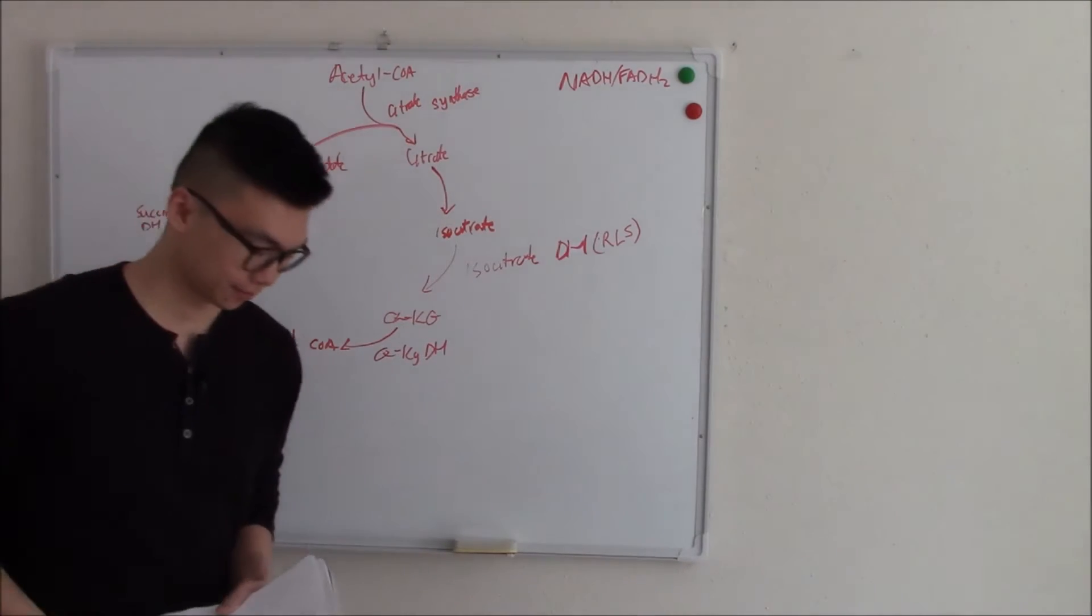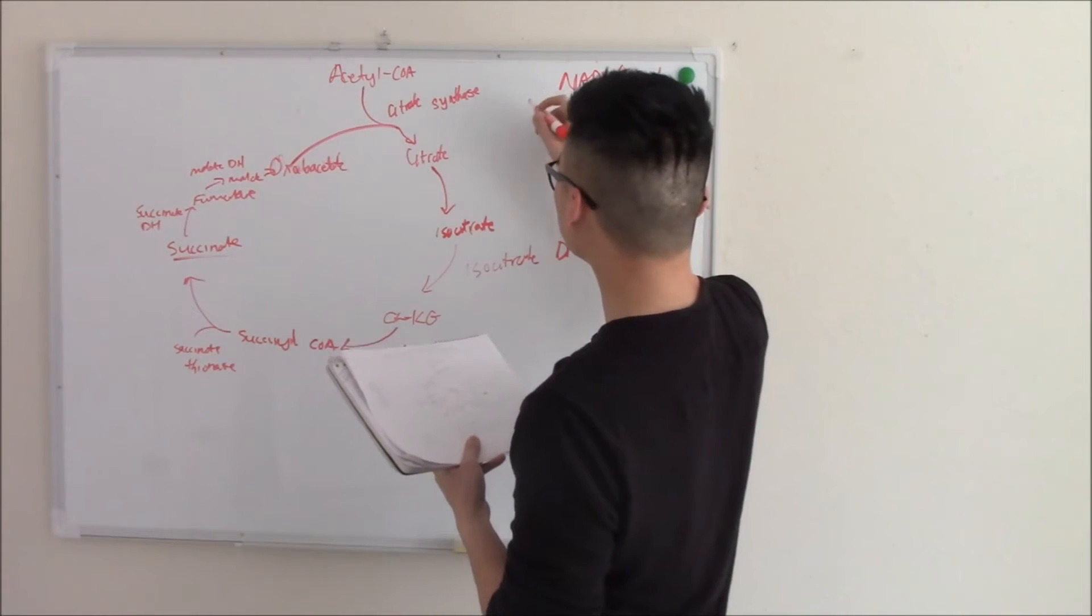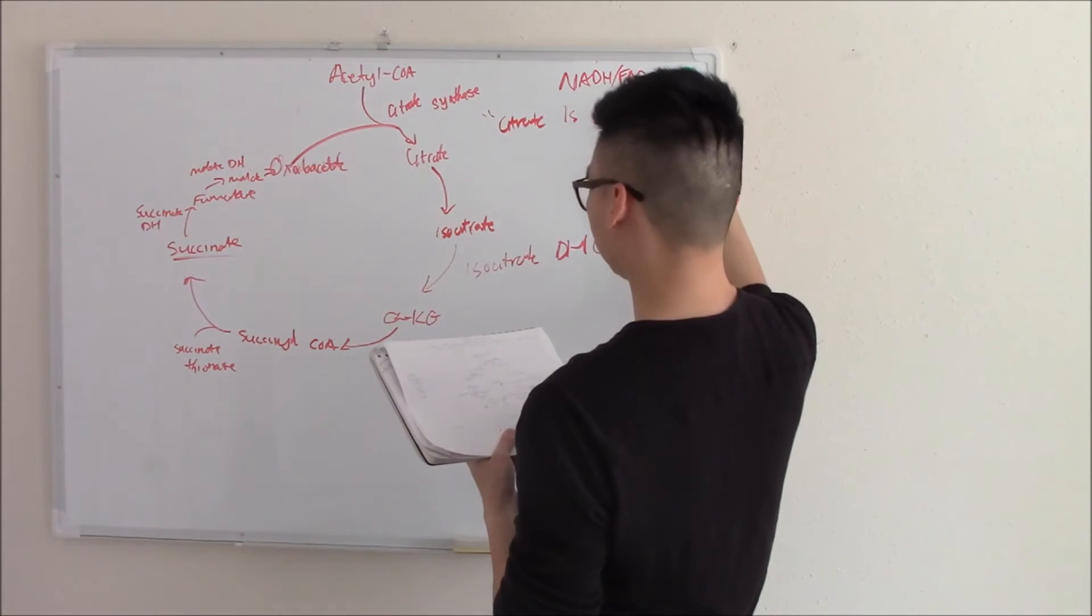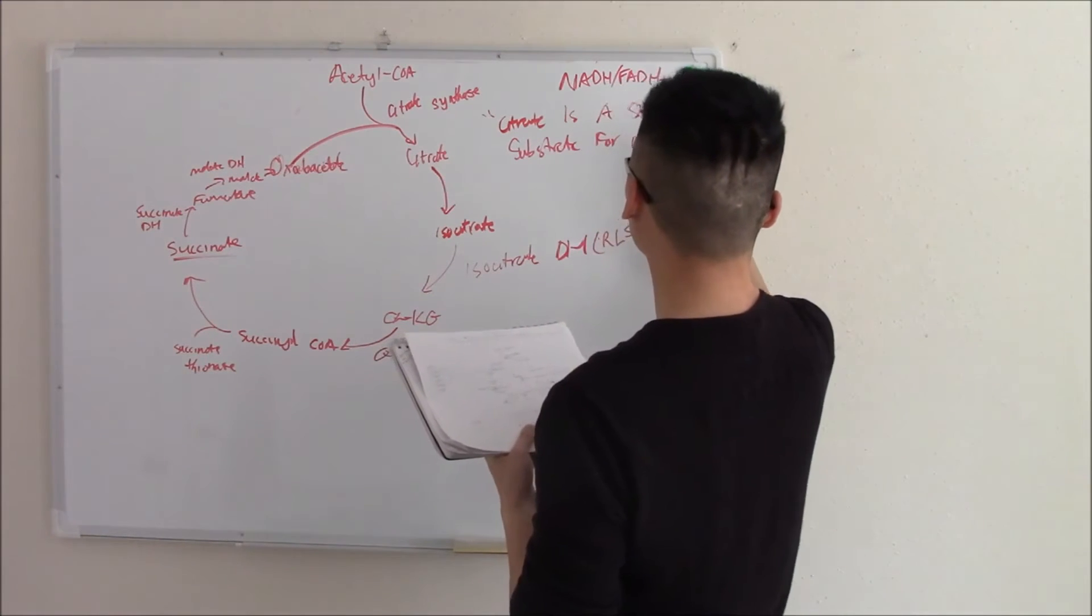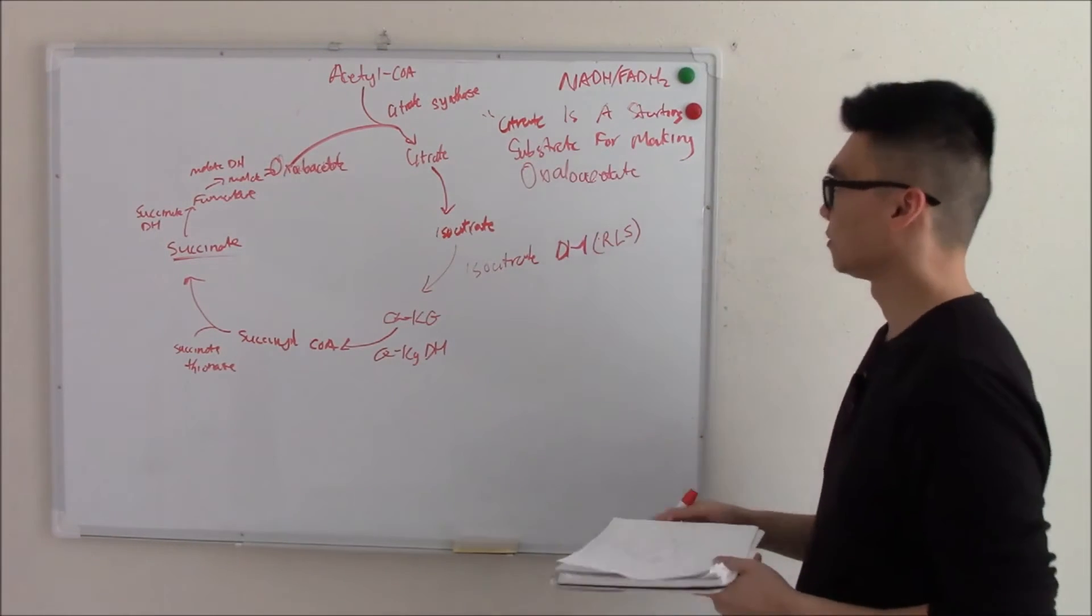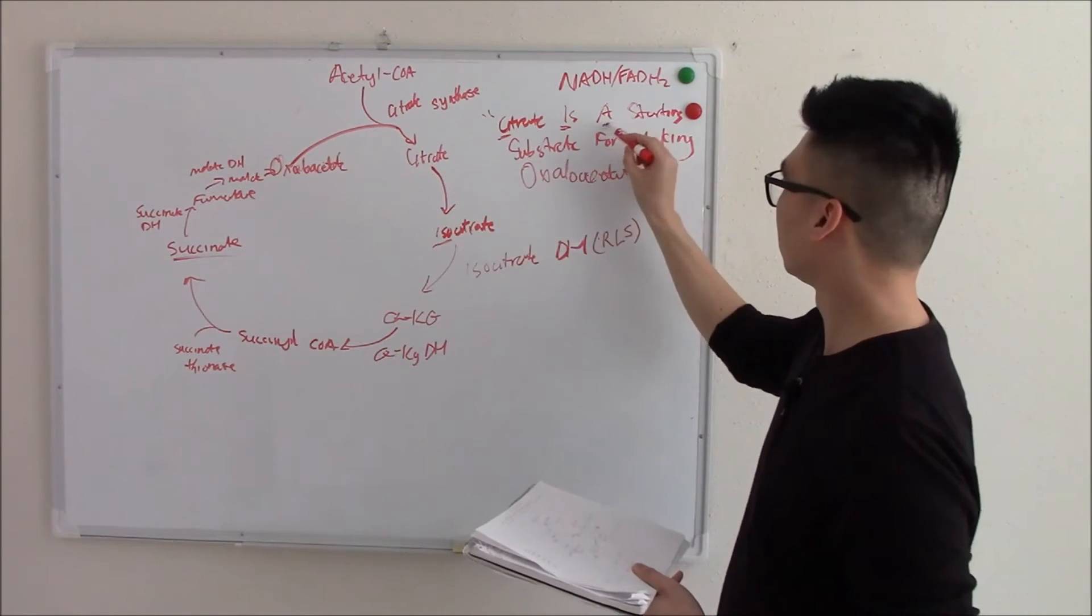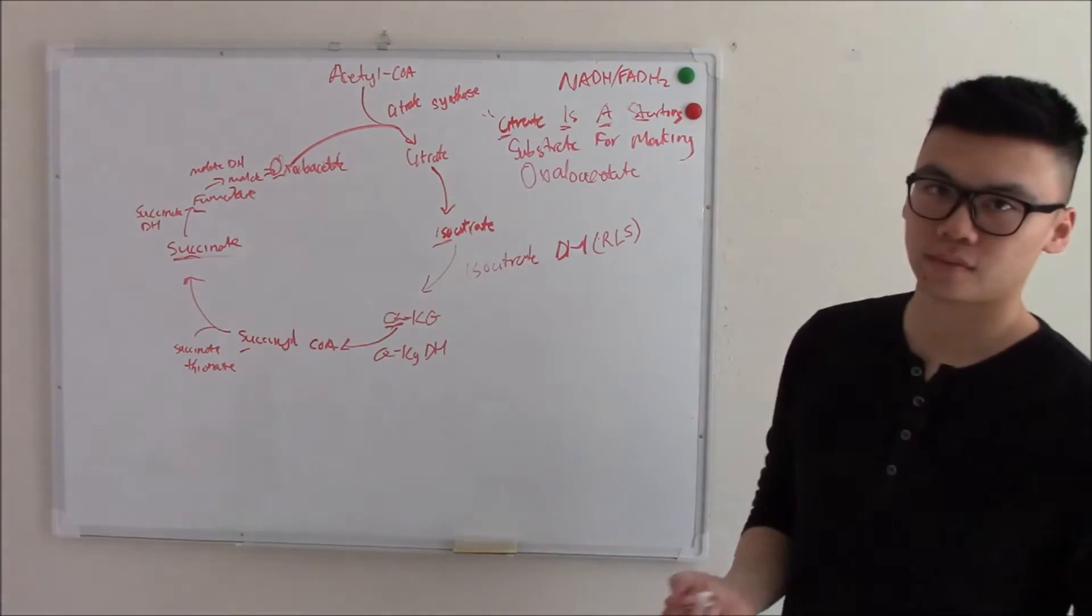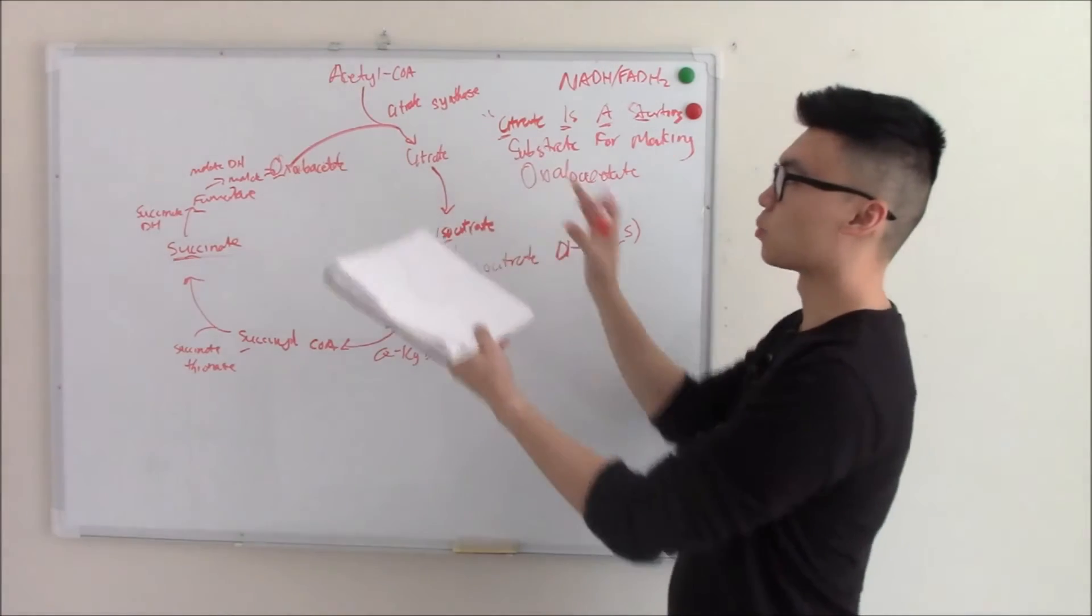That sounds like a lot but there's a trusty mnemonic that I found - I like it a lot. It's called: citrate is a starting substrate for making oxaloacetate. So citrate is a starting substrate for making oxaloacetate. That is the big picture, that is just the products and the enzymes.